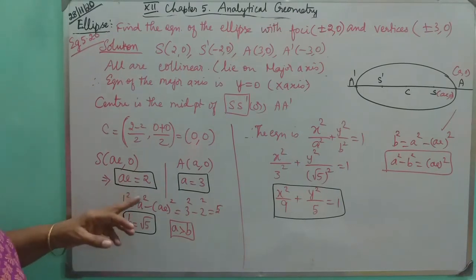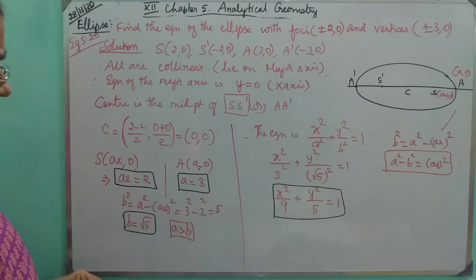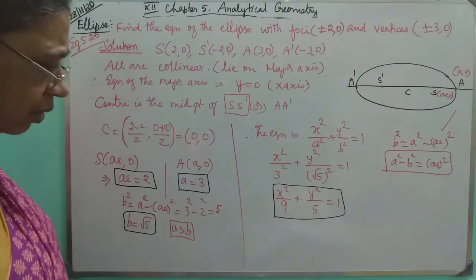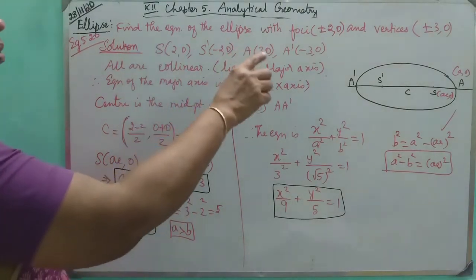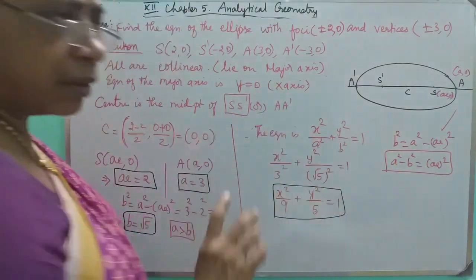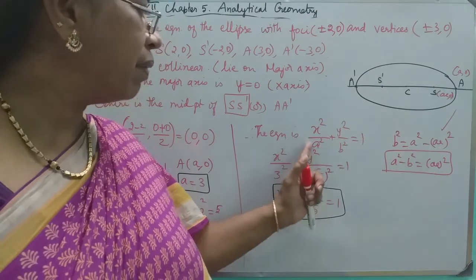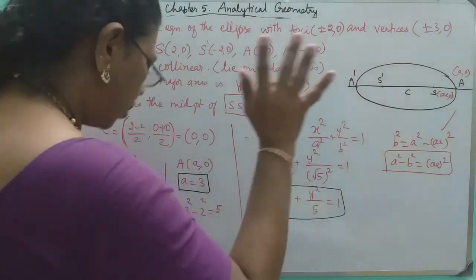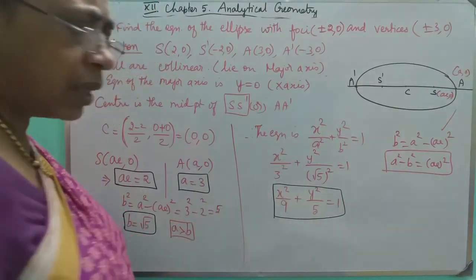B² will be found by subtraction: A² minus (ae)². We don't need to write the root of B; we write B² directly. We can write A² and B² in the standard form of the ellipse equation.